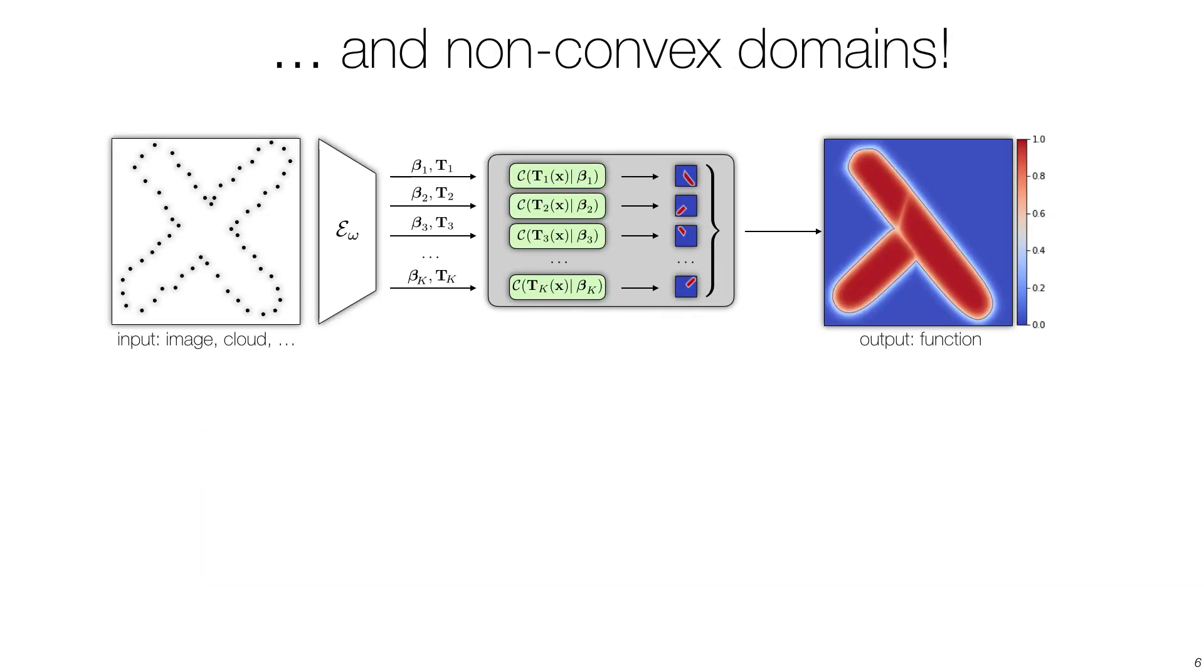We can predict any non-convex object by simply taking unions of convexes. As our representation is a function, this is achieved by a straightforward pointwise max.